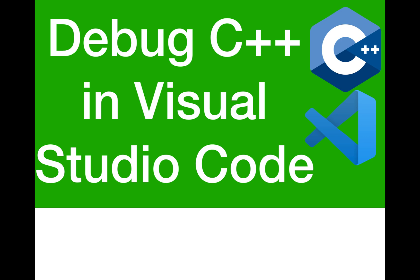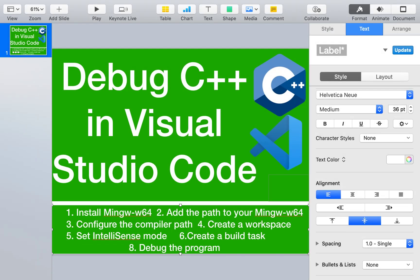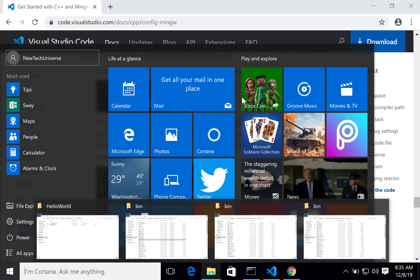In this video we will talk about debugging C++ in Visual Studio Code. As part of that, we will talk about MinGW-64, how to configure MinGW-64 in Visual Studio Code, creating the workspace, configuring the compiler path, setting IntelliSense mode, creating a build task, and debugging the program.